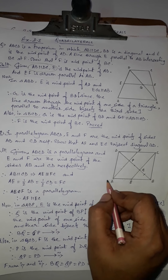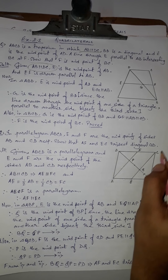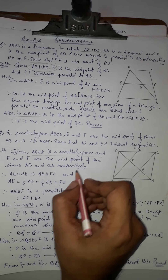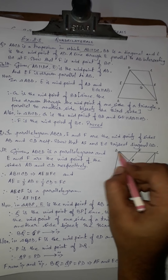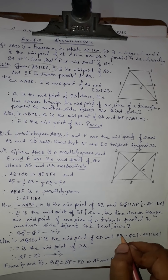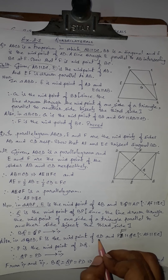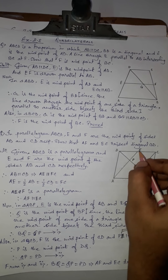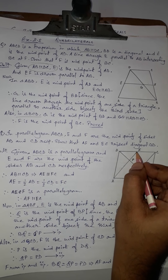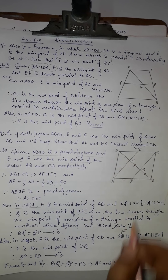Now applying the same reasoning to triangle QCD: F is the midpoint of CD, and PF is parallel to QC — since PF is part of AF and QC is part of EC, and AF is parallel to EC. So F is the midpoint and PF is parallel to QC.